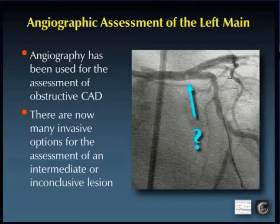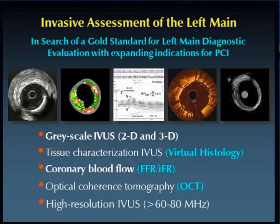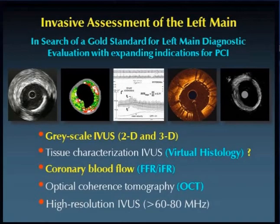As angiography has been used for the assessment of obstructive disease, there are now many invasive options for the assessment of an inconclusive lesion. Of all the imaging technologies and pressure technologies, not only 2- and 3-D grayscale IVUS is ready for prime time today, as is coronary blood flow through FFR and IFR. There may actually be a niche for tissue characterization in the future when looking at a non-obstructive lesion in the left main.